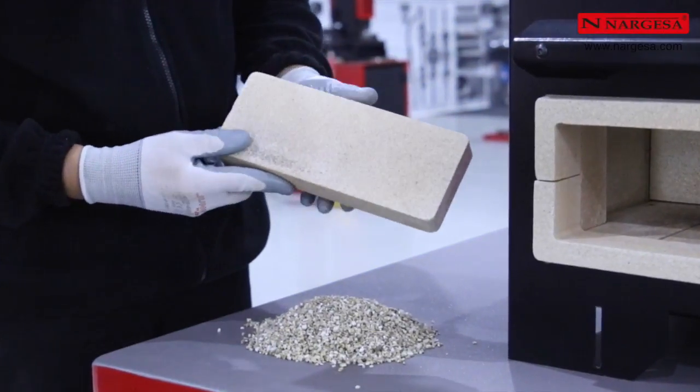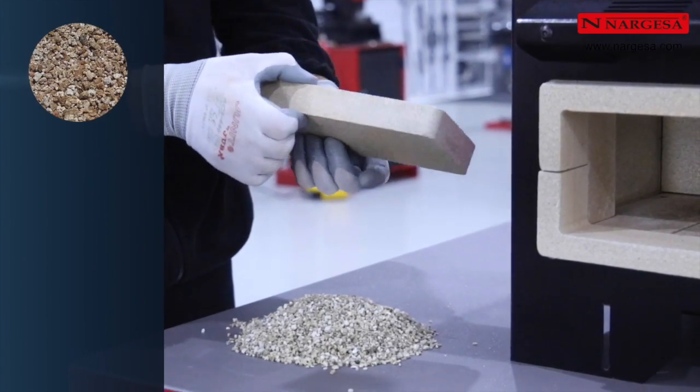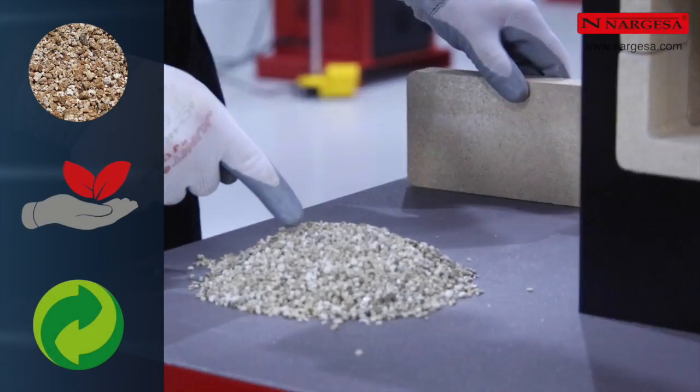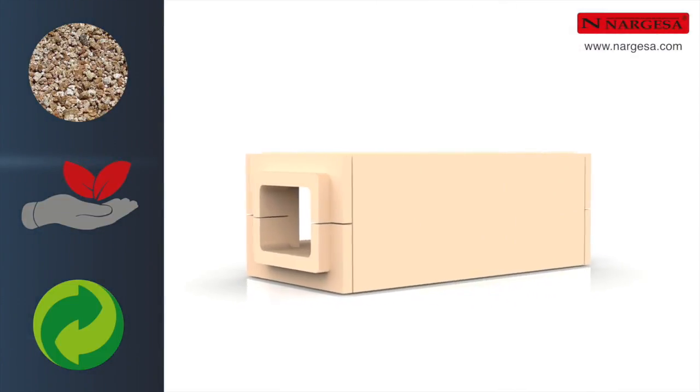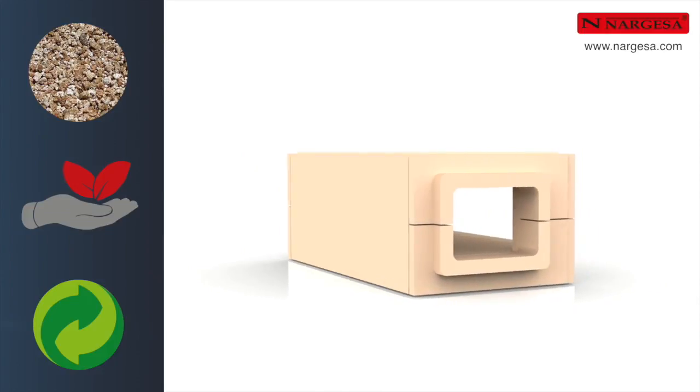L'isolation de la chambre de combustion est un matériel 100% naturel et 100% recyclable. En effet, la vermiculite compactée n'est pas nocive pour la santé puisqu'elle ne contient ni fibre de verre ni céramique.